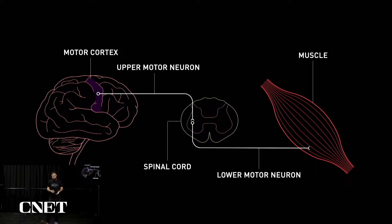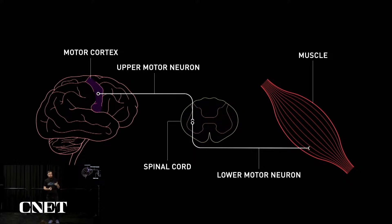While of course there are many other circuits involved in voluntary movement, you can think about the spinal cord as many pairs of these two connections. And in spinal cord injury, one of these connections is severed, unable to make the muscles contract.